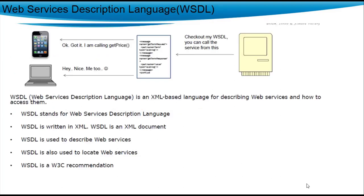So first, let's begin with WSDL — Web Services Description Language. As per this diagram, suppose there are two different users accessing Amazon.com: one on an iPhone, the other on a laptop. They are trying to search for the price of the same product on both devices. They will get the same price because both are accessing the same web service called 'get price'. So WSDL is like the advertisement of a web service. Whenever Amazon advertises its 'get price' web service, the format of that advertisement is WSDL.